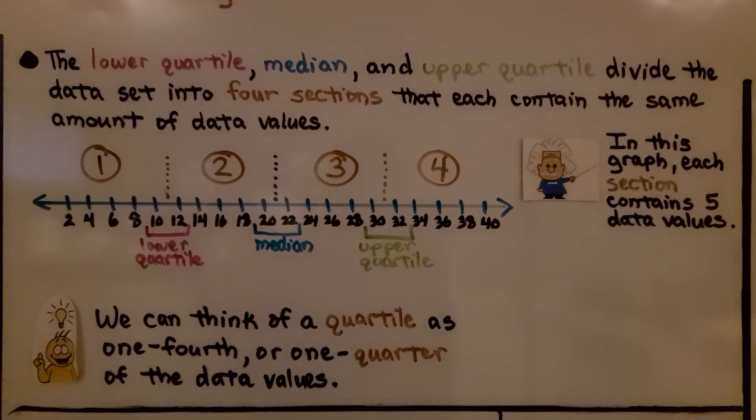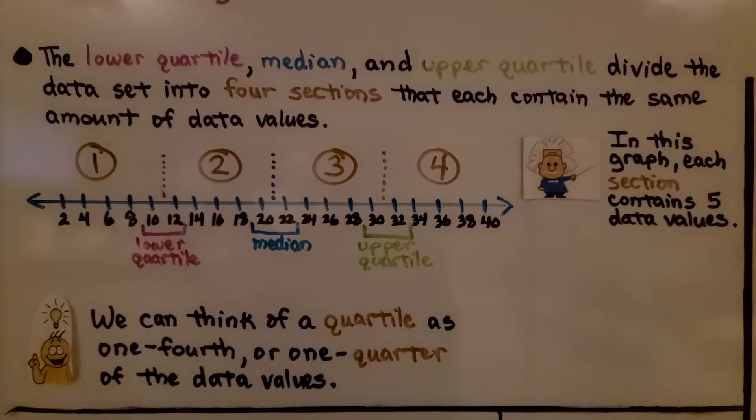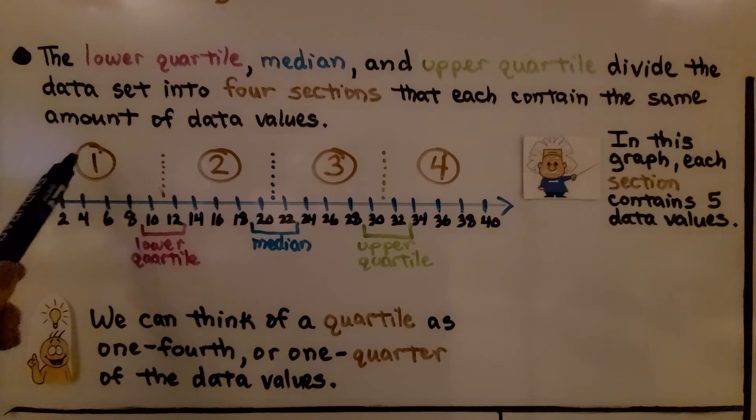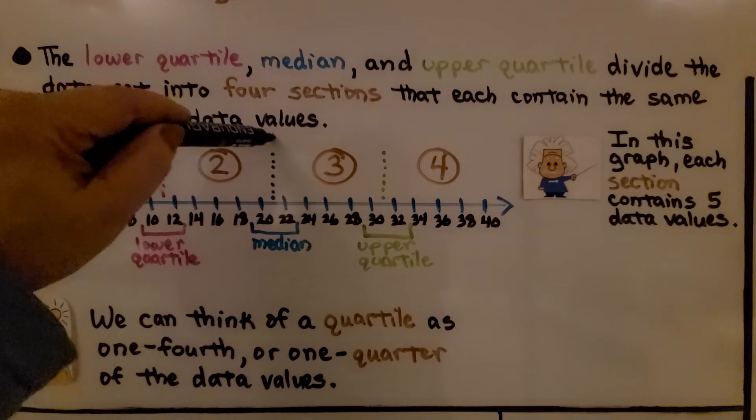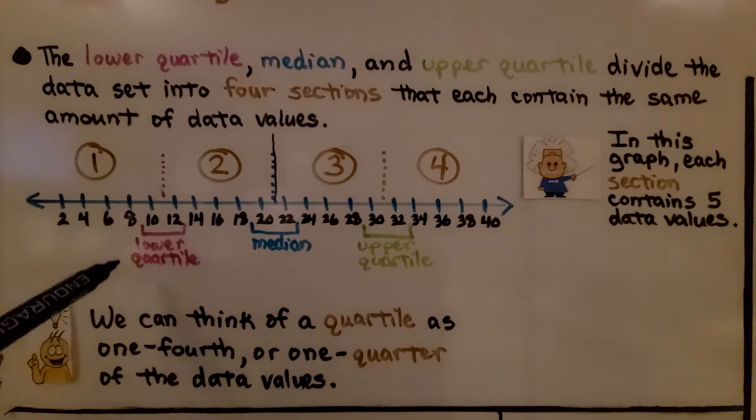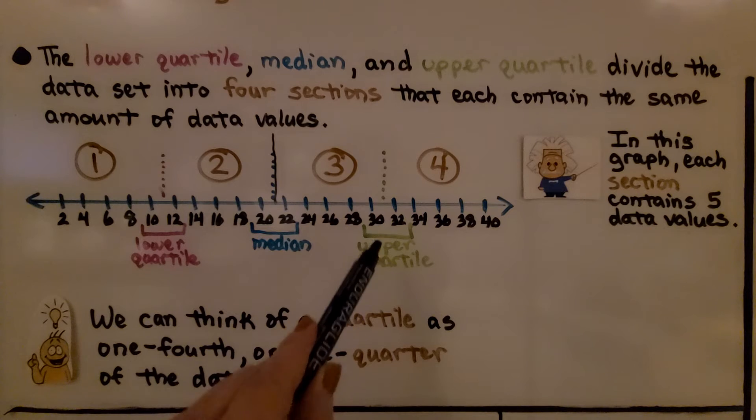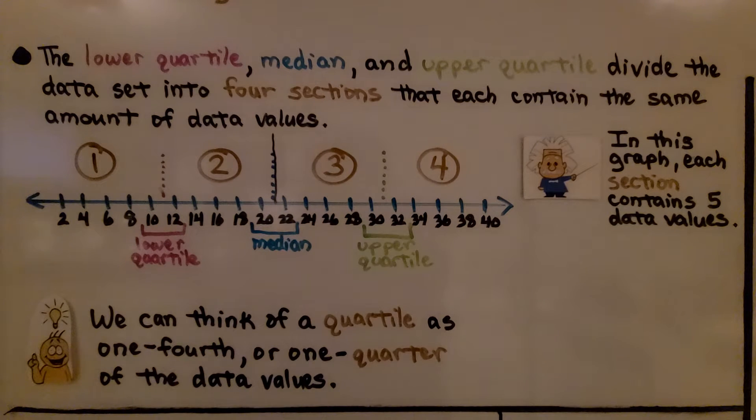The lower quartile, median, and upper quartile divide the data set into four sections that each contain the same amount of data values. In this graph, each section contains five data values. We've got it split into four different sections. The median splits it in half, and then the lower quartile splits the lower half in half, and the upper quartile splits the upper half in half. We can think of a quartile as one-fourth, or one-quarter of the data values.